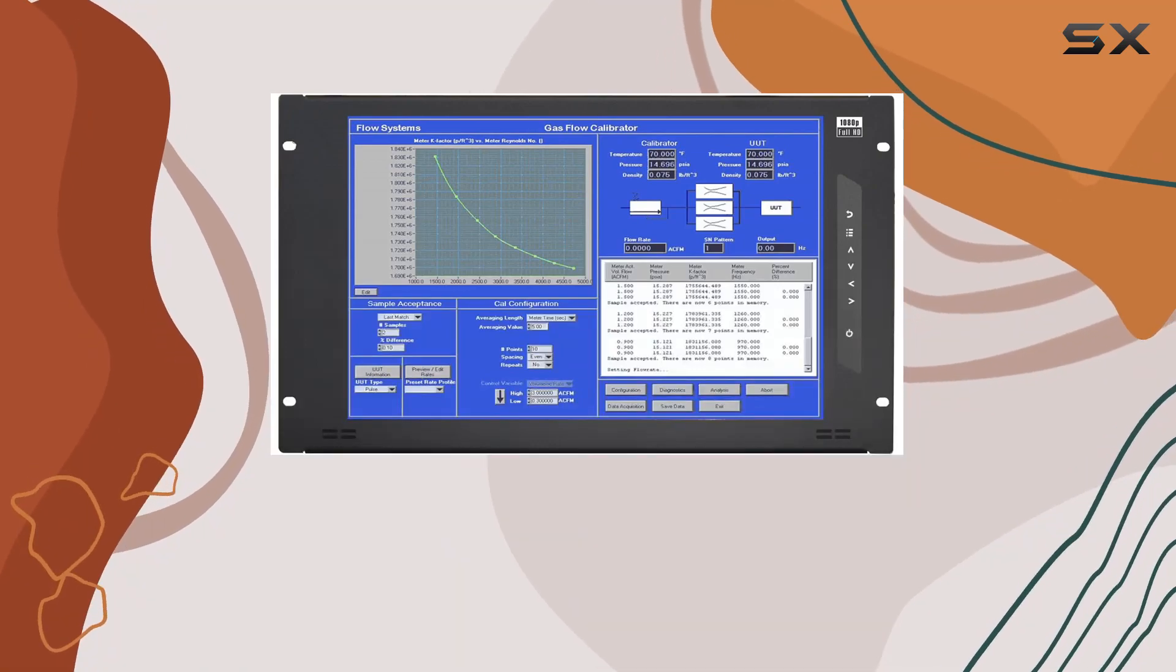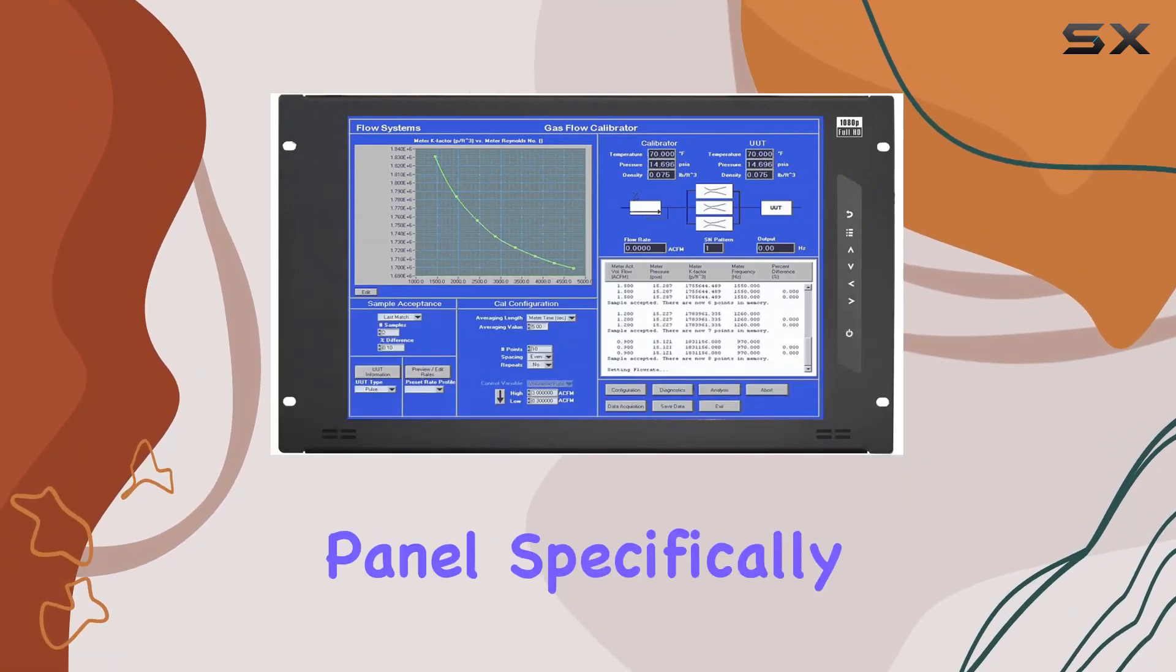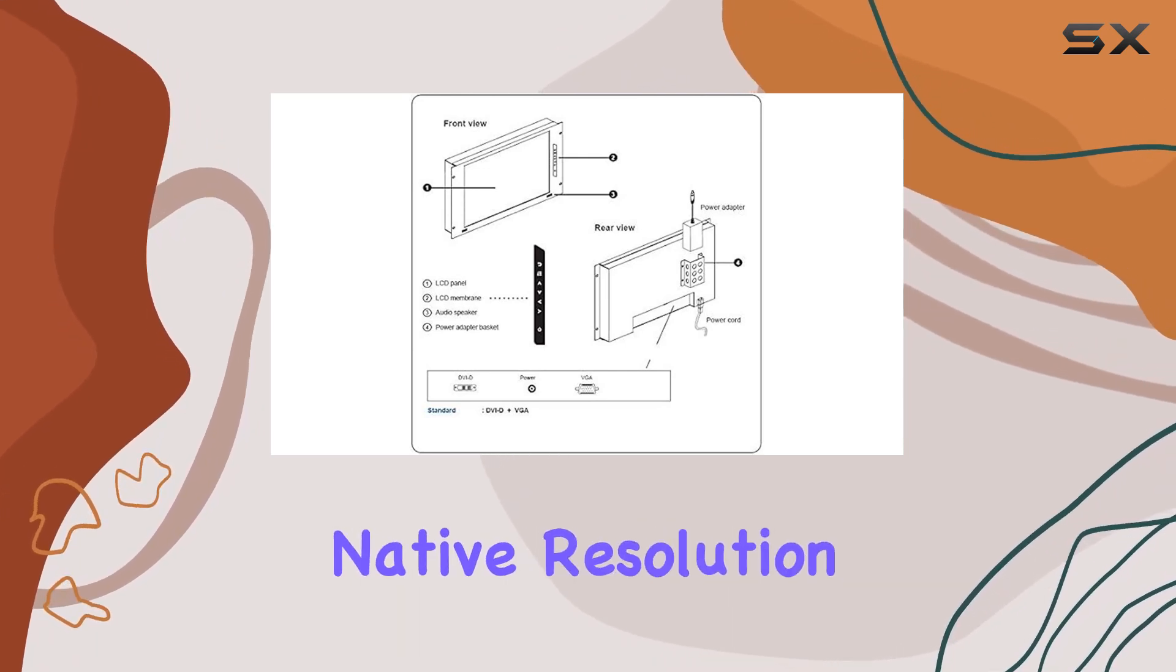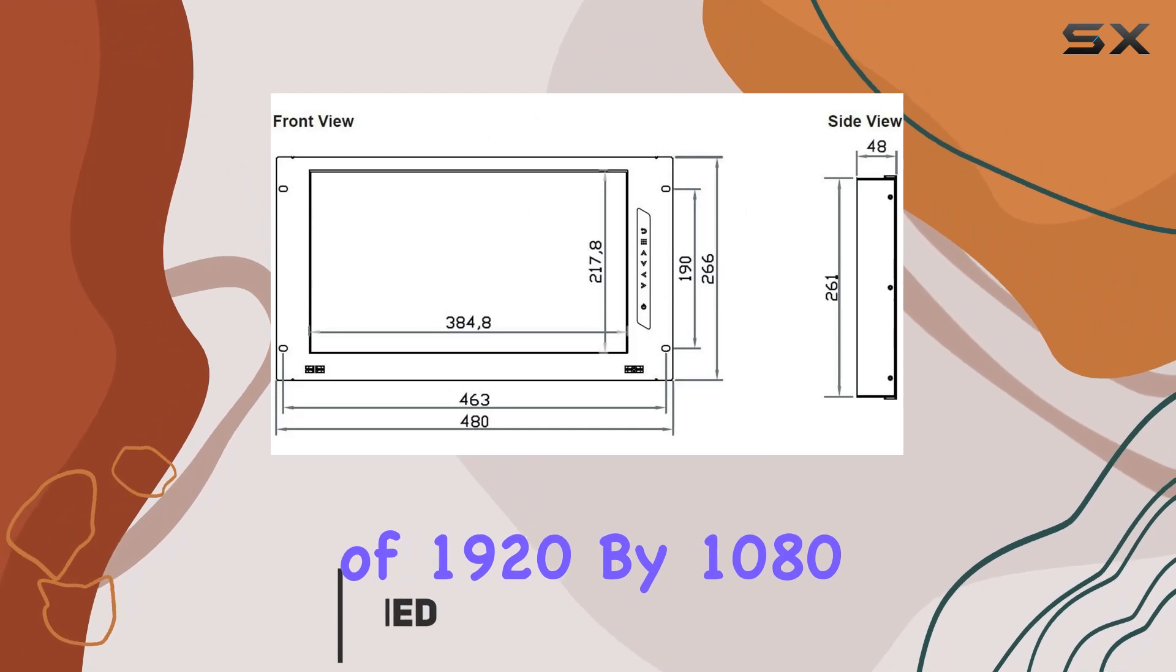Today, we're diving into Crystal Image Technology's rack-mount LCD panel, specifically the 6U 17.3-inch model with a native resolution of 1920x1080 pixels.